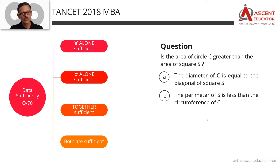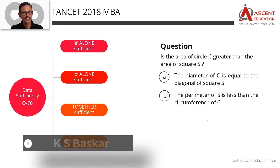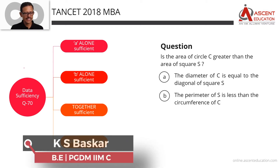In this video, we are going to look at a solution to a previous year TANSAT paper. This is the TANSAT 2018 MBA paper, question number 70, and it is a data sufficiency question.